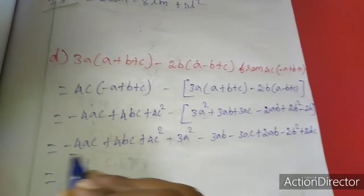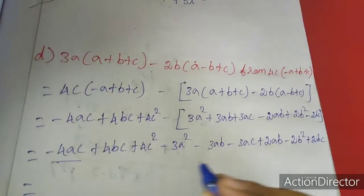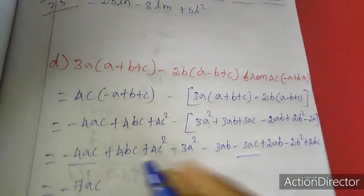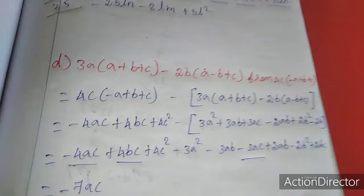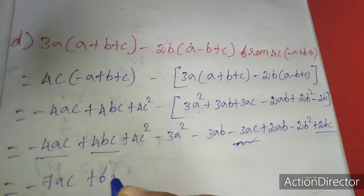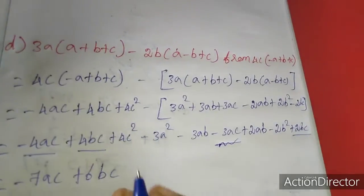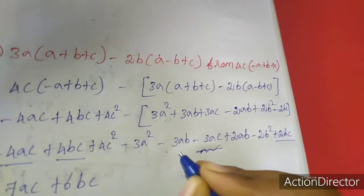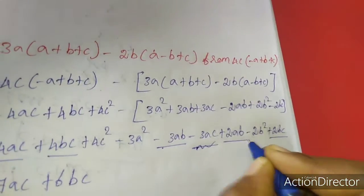AC terms: minus 4AC and minus 3AC gives minus 7AC. BC terms: plus 4BC plus 2BC gives plus 6BC. AB terms: minus 3AB plus 2AB gives minus AB.